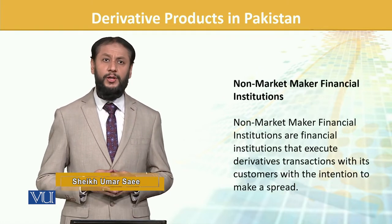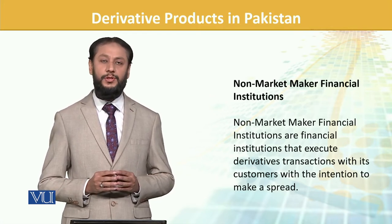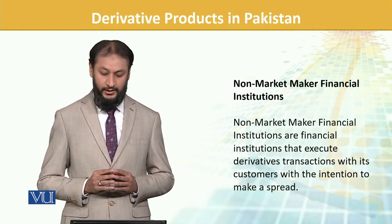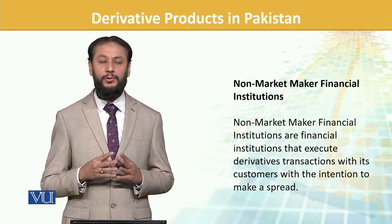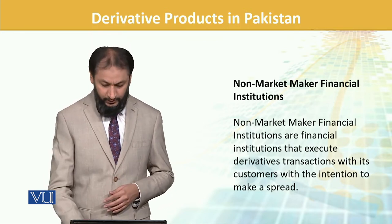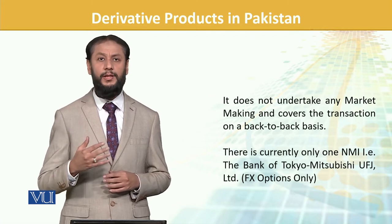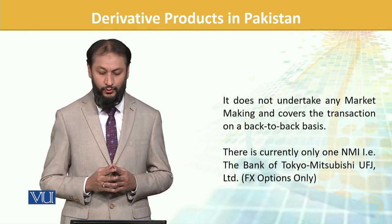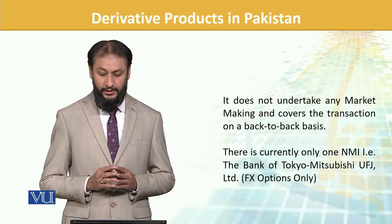There are other organizations and other players called Non-Market Maker Financial Institutions (NMIs). Non-market makers are financial institutions that execute derivative transactions with their customers with the intention of making a spread. They work to earn this spread. Their status is somewhat different — they do not undertake any market making activity. They are only involved in the execution part and cover back-to-back transactions.